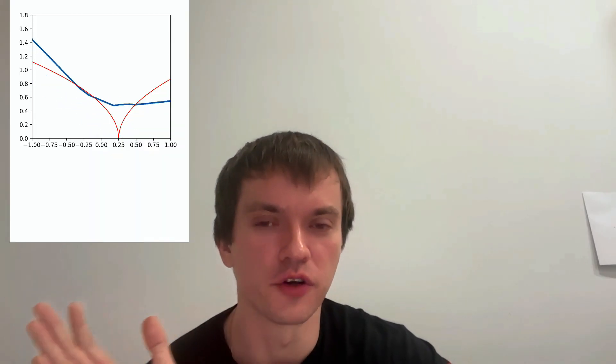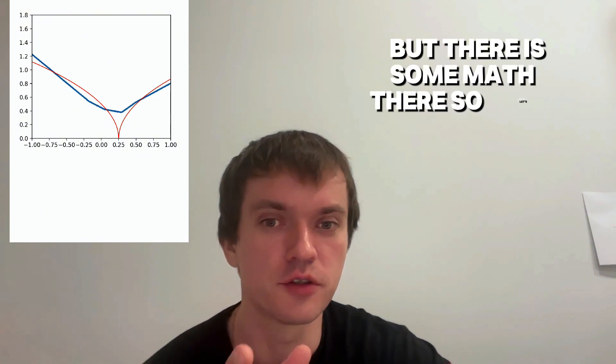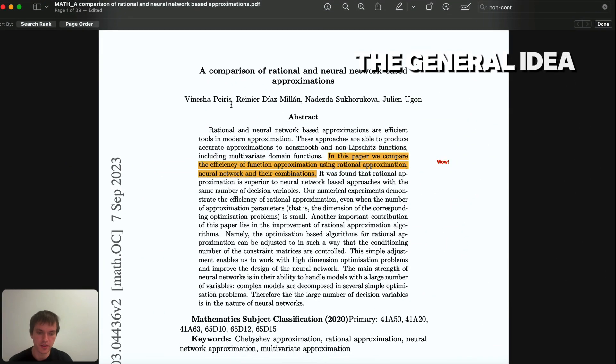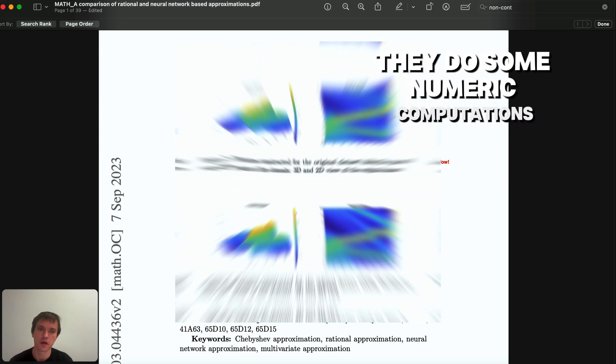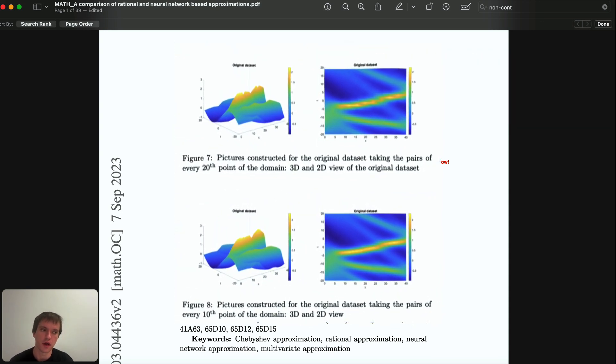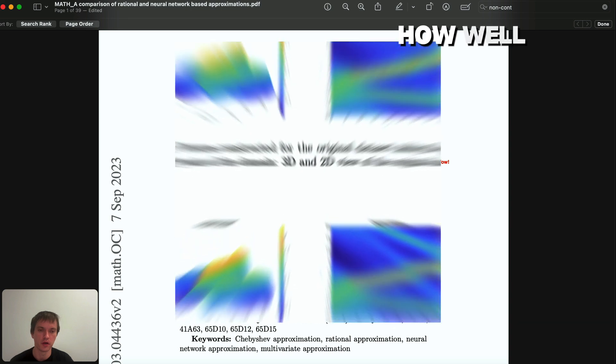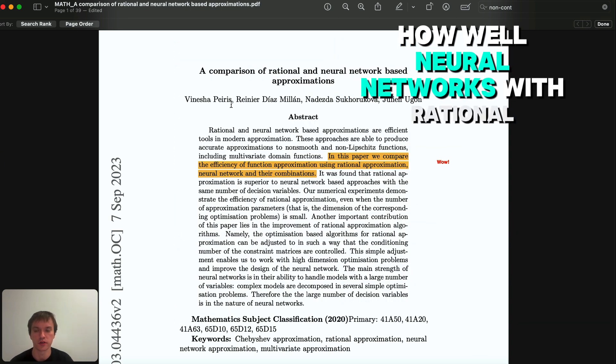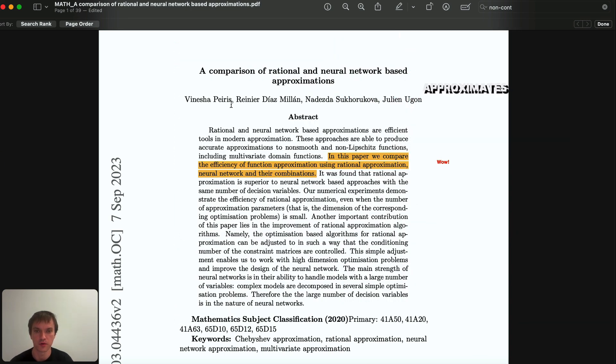It's a machine learning paper, but there is some math there, so let's do it together. The general idea is that they do some numeric computations where they compare how well neural networks with rational activation functions approximate non-smooth and non-Lipschitz functions.